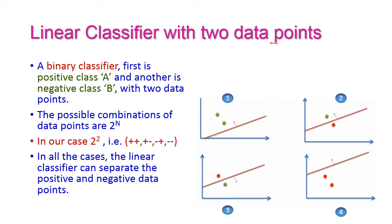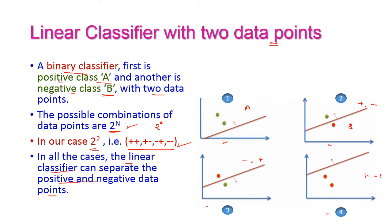First, let us take the linear classifier with two data points. We will take the binary classifier. In the binary classifier, the first class is class A, that is the positive class, and another one is class B, that is the negative class. We are having only two data points. The green colour represents class A and the red colour represents class B. The possible combinations of data points are 2 power n. With two data points, that gives 2 power 2, that is four possible combinations.